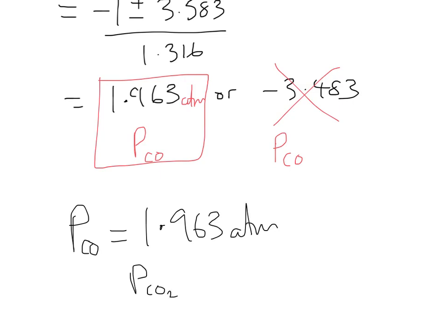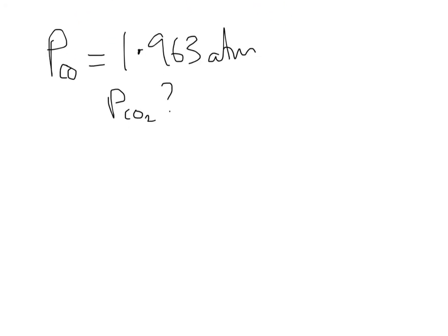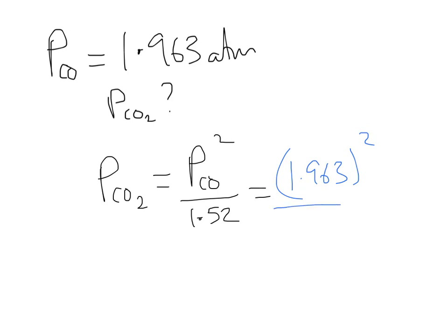And what about the partial pressure of CO2? Well, we just need to pick one of the equations from above and substitute in. We were told the partial of CO2 is the partial of CO all squared over 1.52. And so now we can go ahead and substitute that in, so that's 1.963 squared over 1.52, and that gives us the partial pressure of CO2, 2.54. What are the units? Atmospheres.